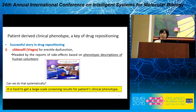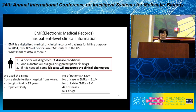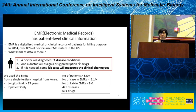However, it seems hard to get large-scale screening results for patients' clinical phenotypes. For this reason, we think about EMRs as a potential resource for large-scale patient-level clinical information. In short, EMR is a digitalized medical record for billing purposes. In 2014, over 85 percent of doctors used EMR systems in the US, so it is already popular and we already have plenty of data.